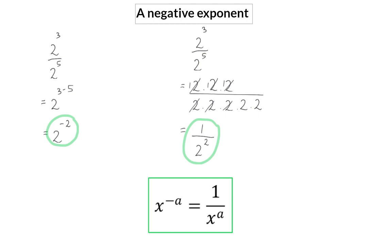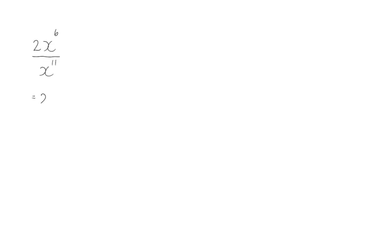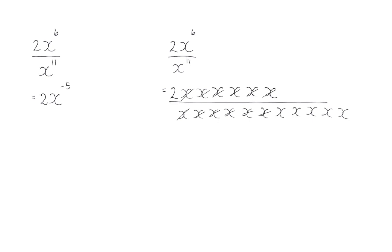The negative exponent in the numerator shows that you should divide by that value. If we simplify using the exponential law, we get six minus eleven, which gives us minus five in the exponent. If you instead expand first and then simplify, you are left with two in the numerator and x to the power of five in the denominator. It is important to realize that only the base with the negative exponent moves to the denominator — the two stays in the numerator.